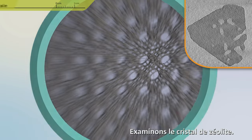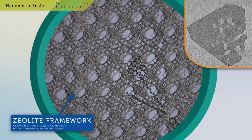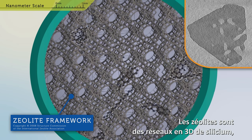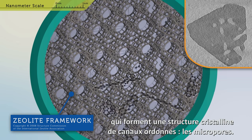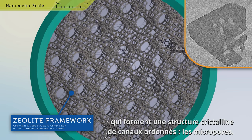Let's take a closer look at the zeolite crystal. Zeolites are an open three-dimensional network of silicon, aluminium and oxygen atoms, forming a crystalline structure of ordered channels called micropores.